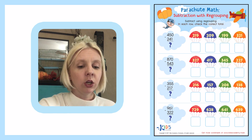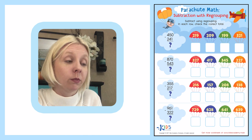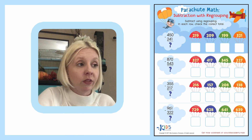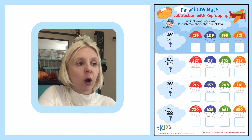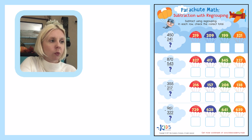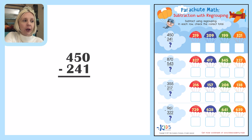What I'm going to do is write out each one of my problems and line them up — and I'm probably going to need to regroup. So the first one is 450 minus 241.